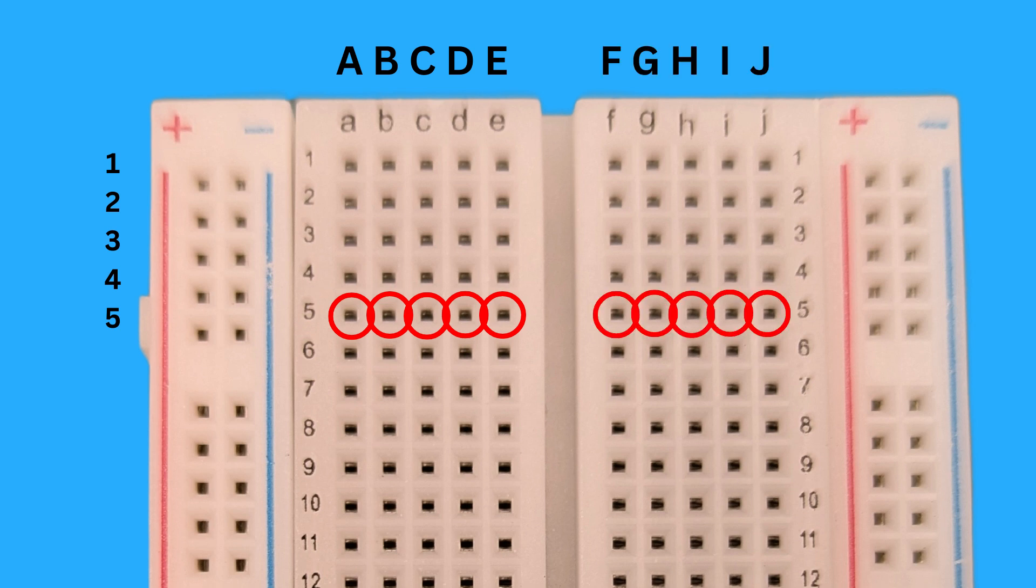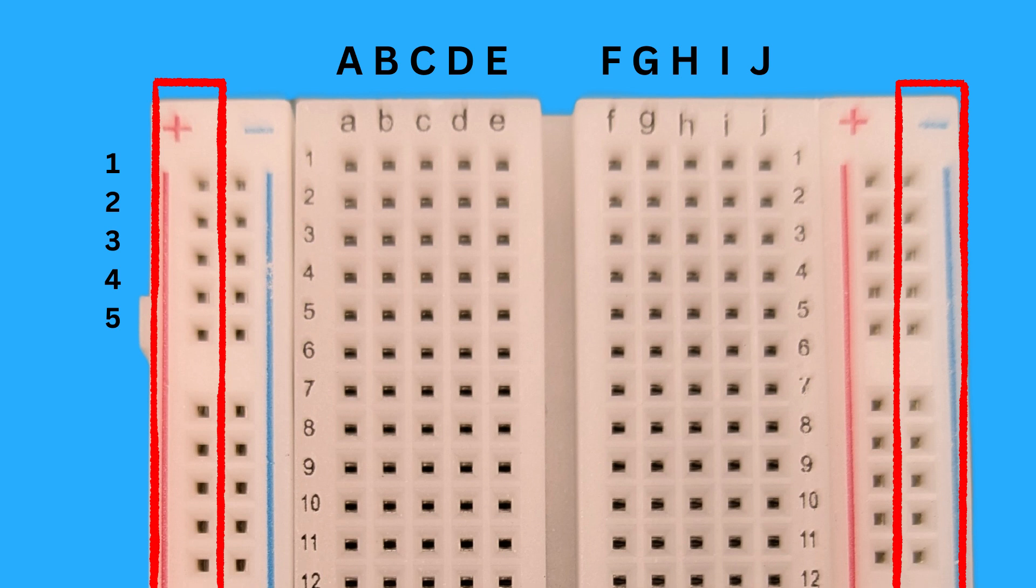But remember, the rows on either side of the center gap are not connected, so rows A through E are separated from rows F through J. On the other hand, the power rails are connected vertically, so the holes running up and down the red line are all connected to each other. And the same goes for the blue line.